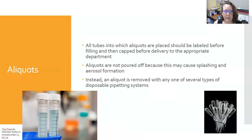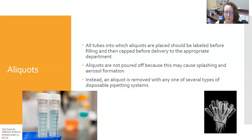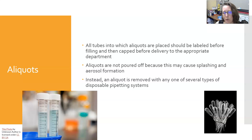All tubes into which aliquots are placed should be labeled before filling and capped before delivery to the appropriate department. It is very important to put the right information and properly label the aliquot, because they become the specimen. Aliquots are usually not poured off because this can cause splashing and aerosol formation; instead, an aliquot is removed using disposable pipetting systems, especially transfer pipettes.